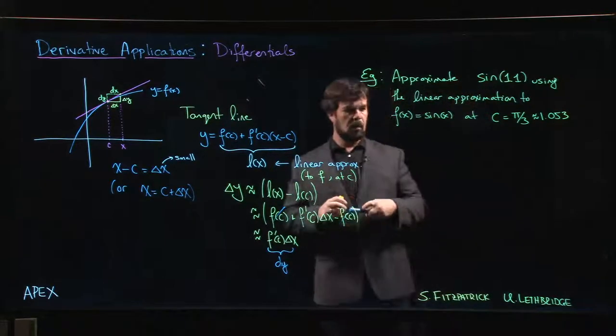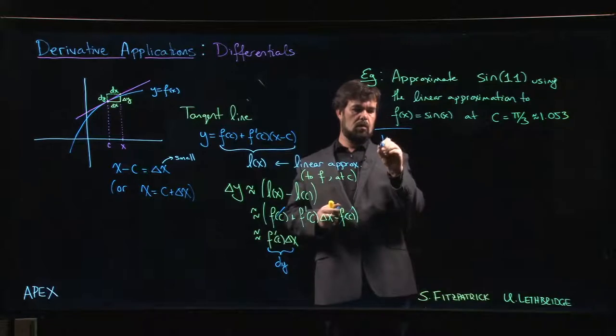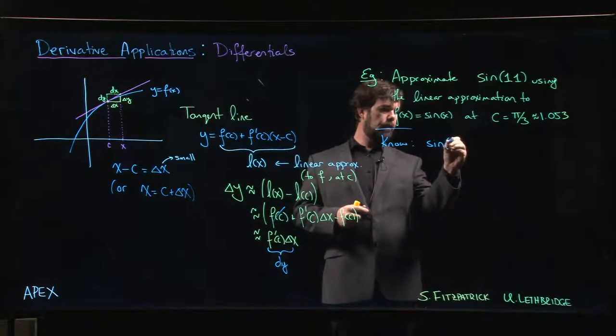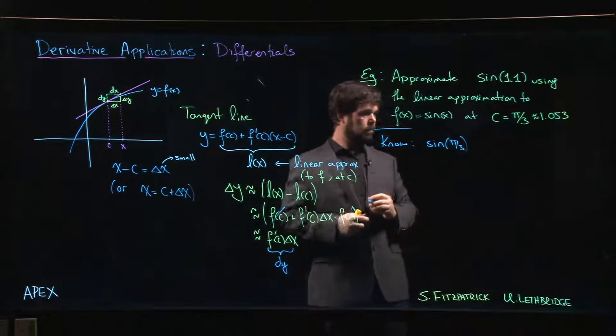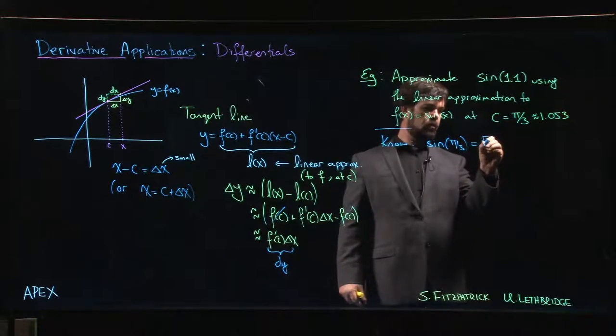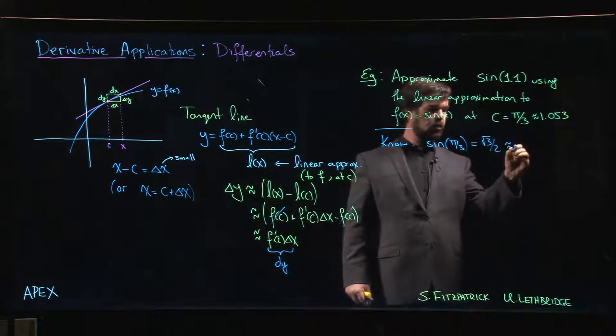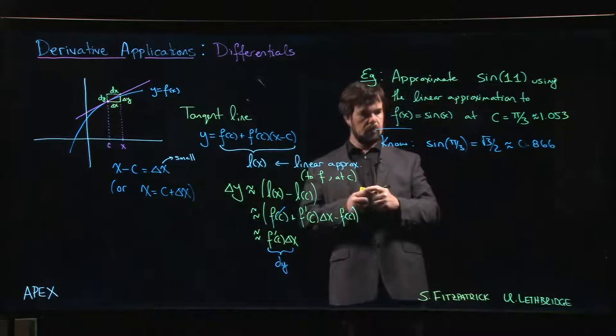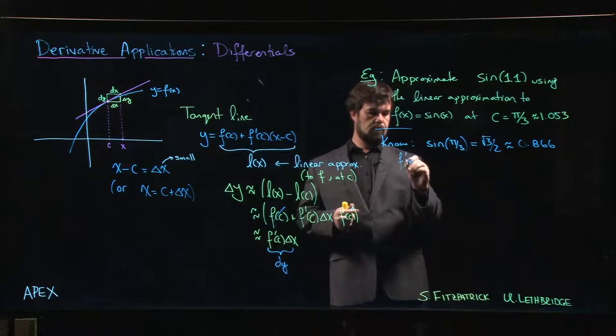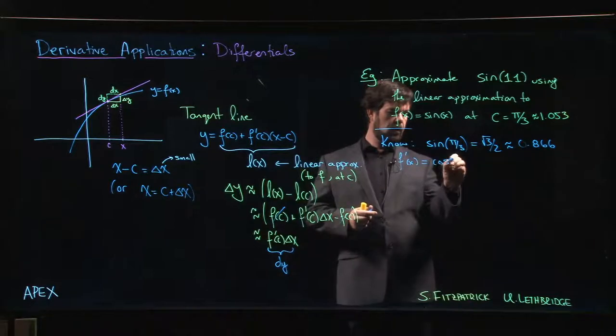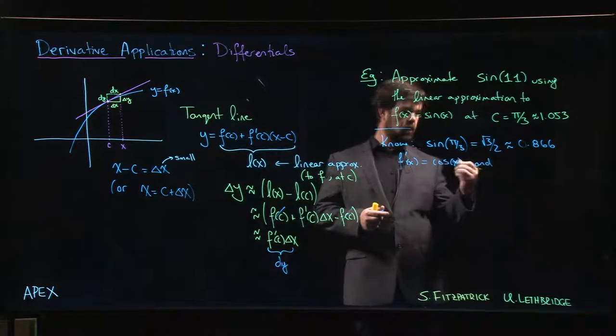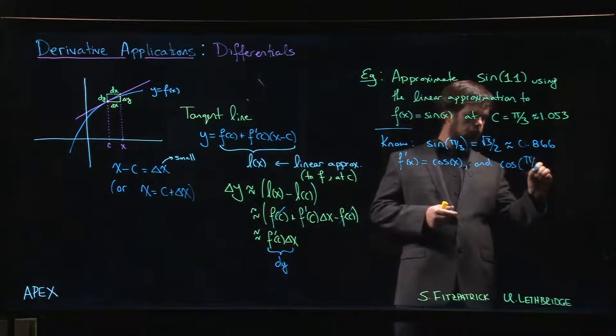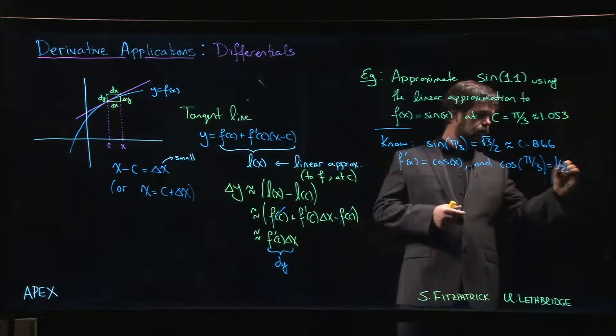What else do we know? We know that sine at pi over three is square root of three over two, which is about 0.866. We know that f prime of x is cos x, and cos of pi over three is a half.